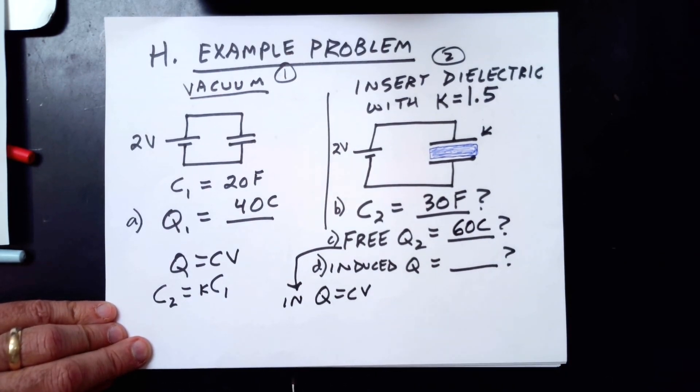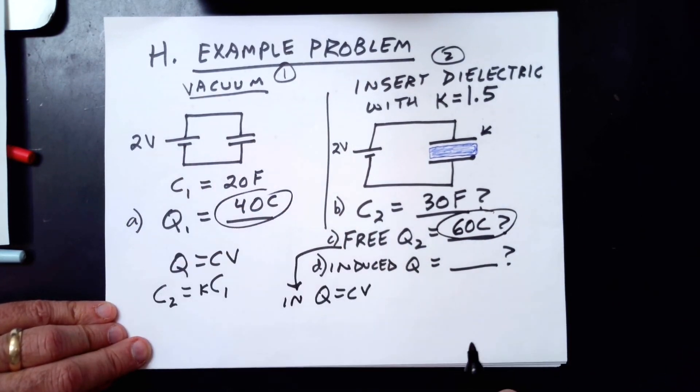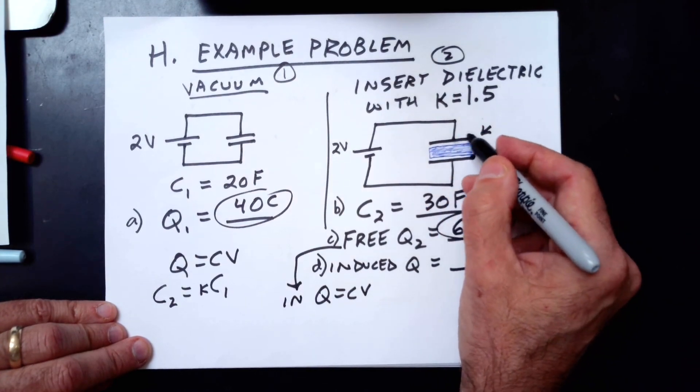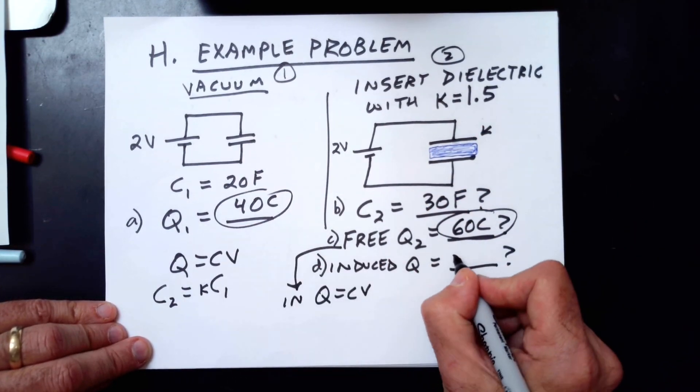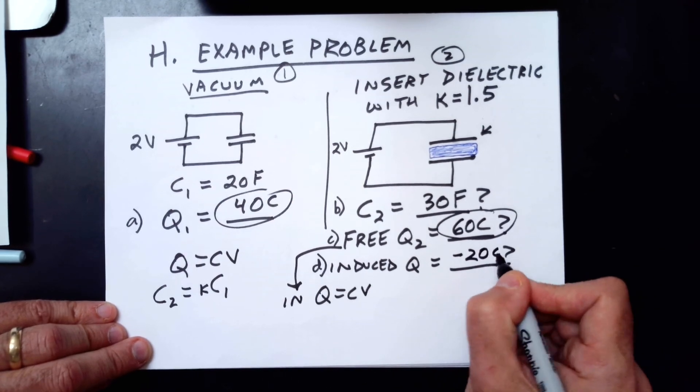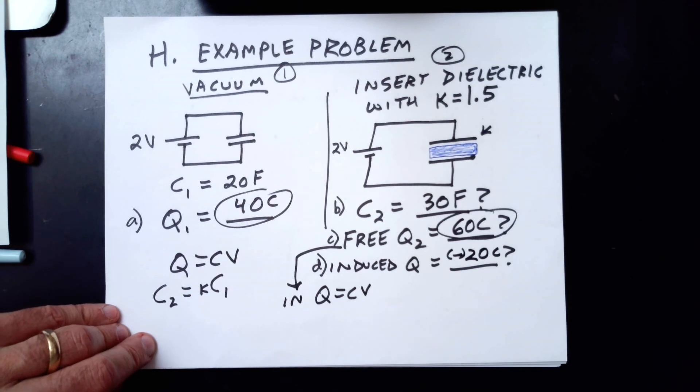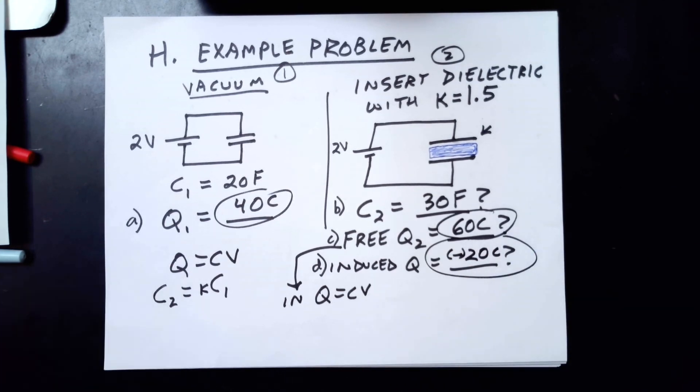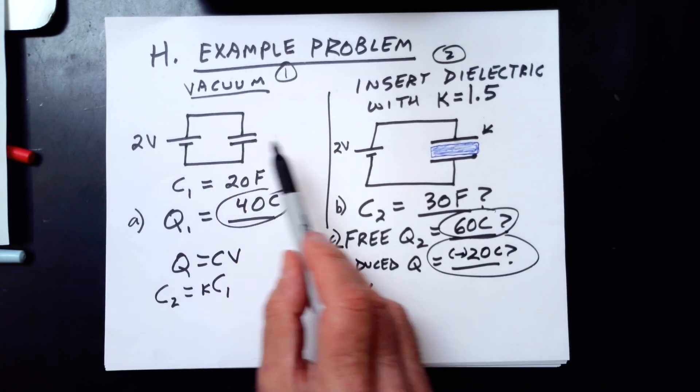And finally, the induced charge. Well, you originally had 40 Coulombs when hooked to a 2-volt battery. Now you have 60 Coulombs when hooked to a 2-volt battery. The net charge really has to be the same. So that means to get from 60 to 40, the induced charge is negative 20 Coulombs. We're going to put that negative in parentheses. It's not always given in an answer either in the book or on the AP test. They just may want the magnitude of the induced charge. For problems where the voltage is not constant, you'd use the same principle, but the problem would be more complex.